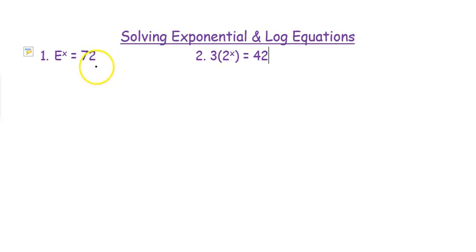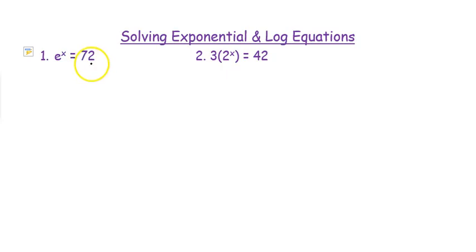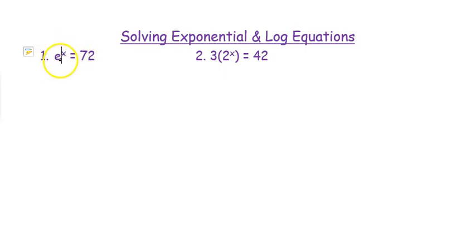Today we're going to talk about solving exponential and log equations. Our first one is e to the x equals 72, and we're wanting to get to x. The way we get to x is by using the inverse of this exponential, which is a log. Since it's base e, that would be natural log.